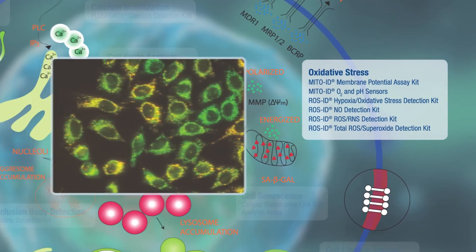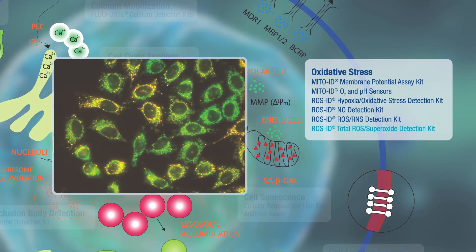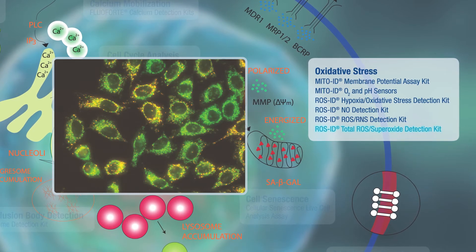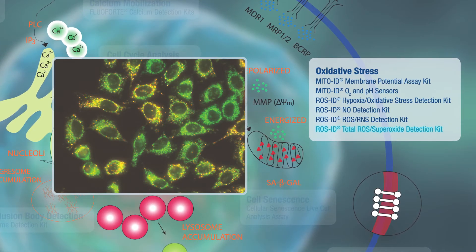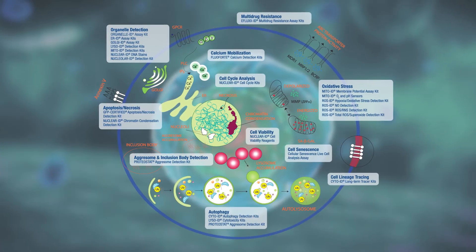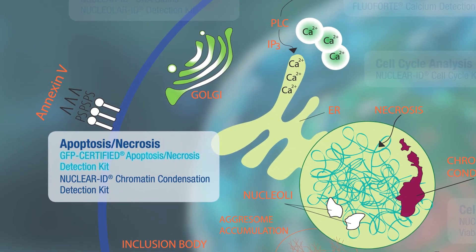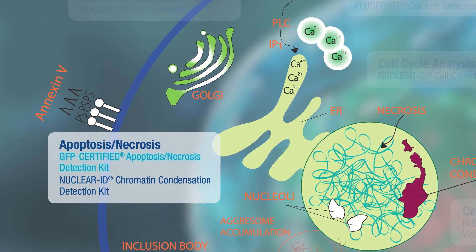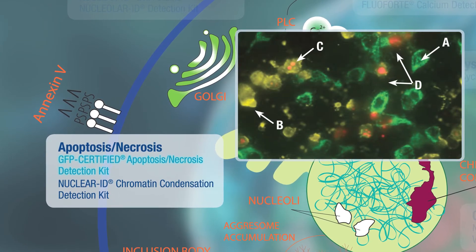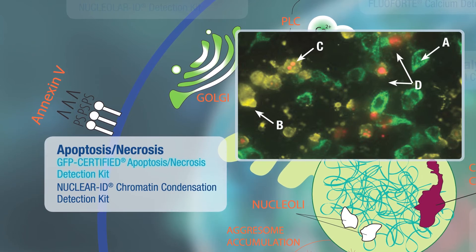For example, using the ROS superoxide detection kit, specifically distinguish between ROS and superoxide simultaneously in live cells. Explore the stages of cell death with a GFP-certified apoptosis necrosis detection kit to easily differentiate between healthy, early apoptotic, late apoptotic, and necrotic cells.